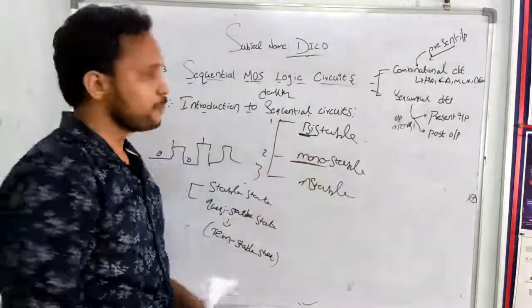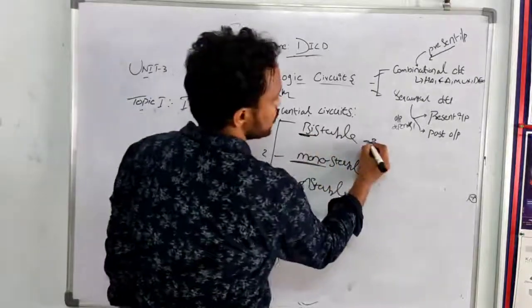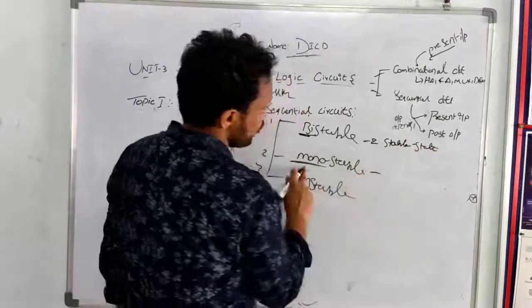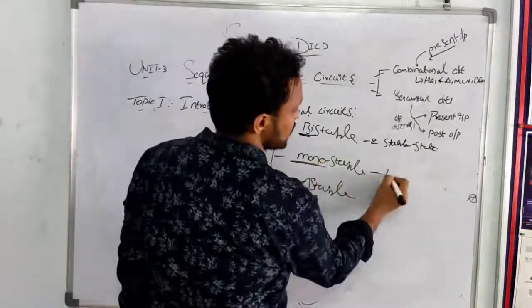Bi-stable means bi. Bi means two – two stable states. Mono means single – one stable state.